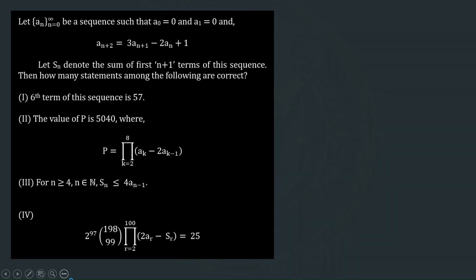Let us start. The question says: let {aₙ} from n = 0 to infinity be a sequence such that a₀ = 0 and a₁ = 0, and a recurrence relation holds. Let Sₙ denote the sum of the first n+1 terms. We are asked to find how many of the following four statements are correct, and we will check each one by one.